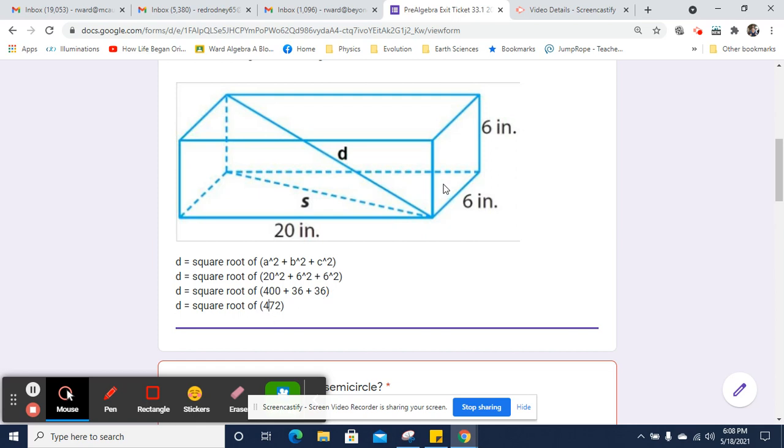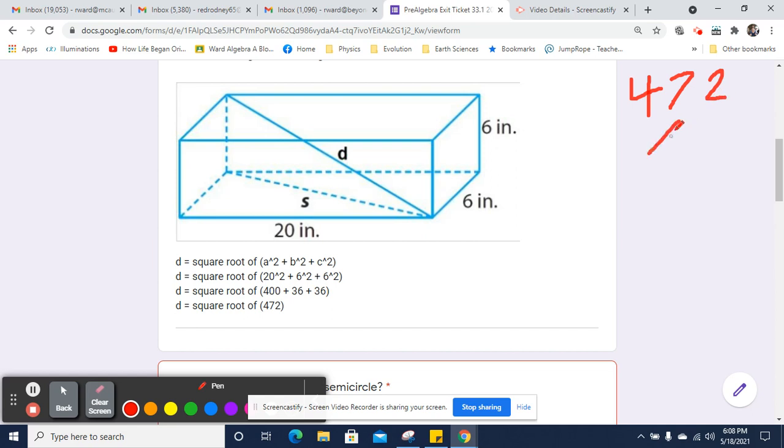Now, to simplify the square root of 472, it'll be useful to know the factors of 472. So we can start breaking that down. 472 can split into 2 times 236, which we can split down further into 2 times 118, which we can split into 2 times 59.